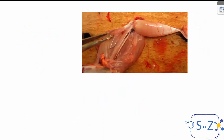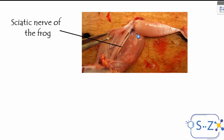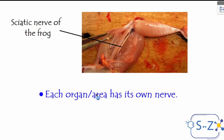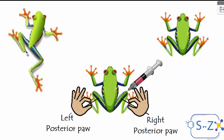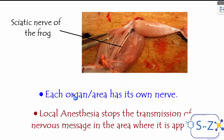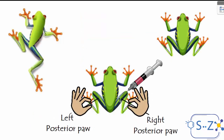Anatomically speaking, all these experiments are done on the sciatic nerve of the frog, which is a long nerve found in the leg. What can we conclude from the previous experiments? First, each organ or area has its own nerve — when we pinched the right posterior pole, only the right posterior pole flexed, and when we pinched the left, only the left flexed. Second, local anesthesia stops the transmission of the nervous message in the area where it is applied — the anesthesia only stopped transmission in the right posterior pole and had no effect on the left.